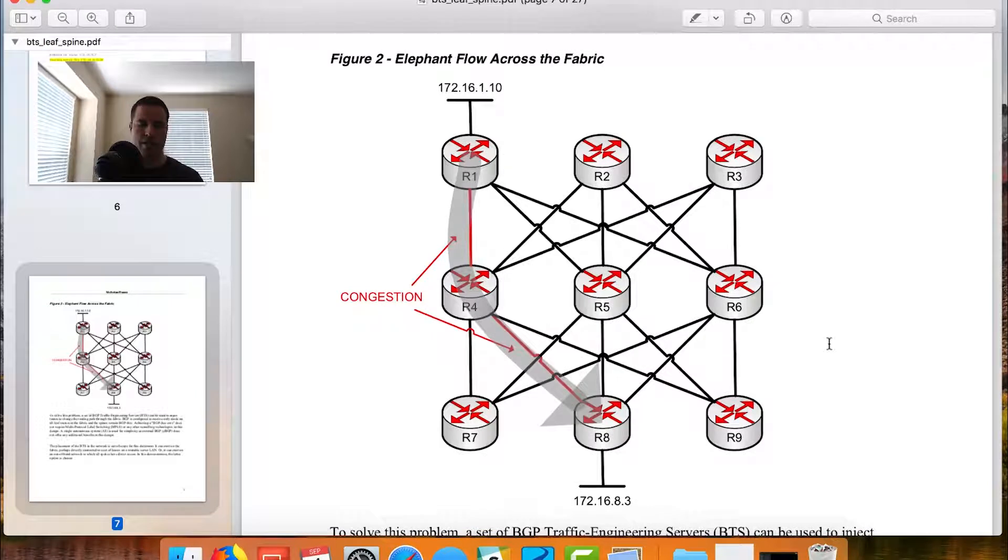If we scroll down some more, we can look at the problem statement, which is shown in this picture. I have an elephant flow, a really high bandwidth flow from a server on the 172 subnet at the top down to a server on the 172 subnet at the bottom. Because networks typically load share on a per flow basis, it's true that R1 could have chosen R4, R5, or R6 for this flow. It does have to pick one, and it generally isn't going to do per packet, break that flow up across multiple different links, because that could lead to out-of-order packets. They tend to stick together. So what can we do about this problem?